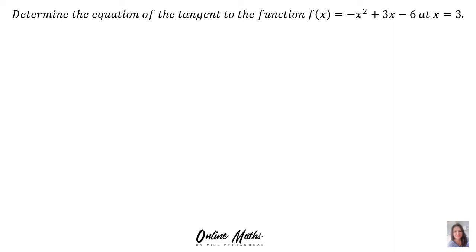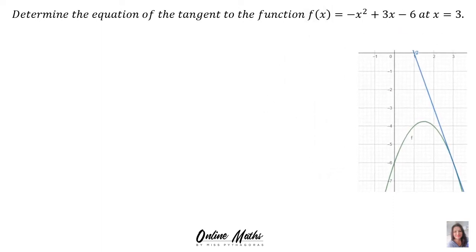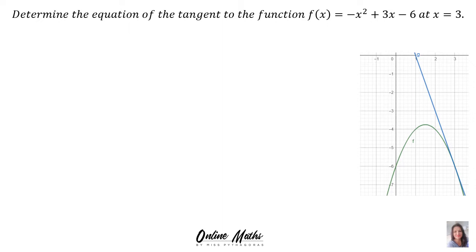Determine the equation of the tangent to the function f(x) = -x² + 3x - 6 at x = 3. I've included a sketch of the situation, but you don't have to give a sketch — I gave you the sketch just to explain what's going on. We are finding the equation of the tangent, which is the blue line, to the function, and it's all happening at the point where x = 3. Remember, a tangent is a straight line.